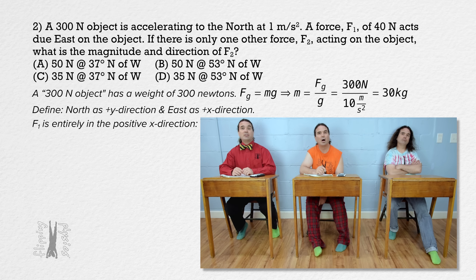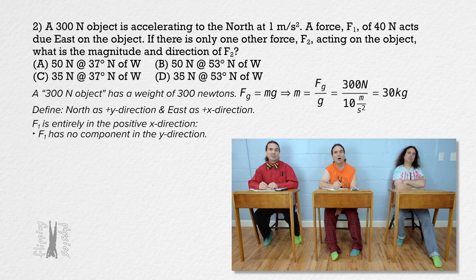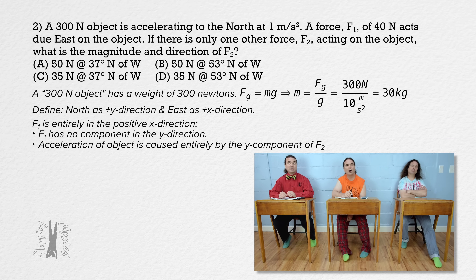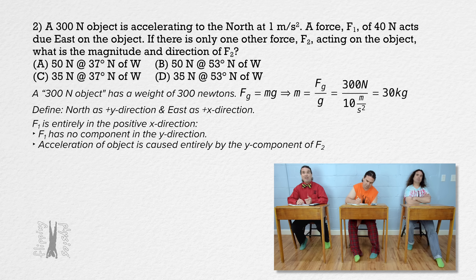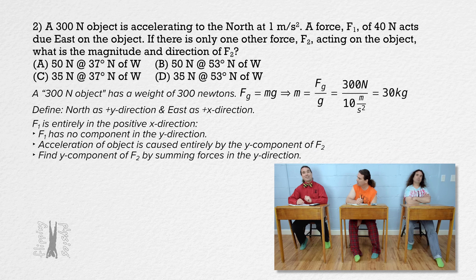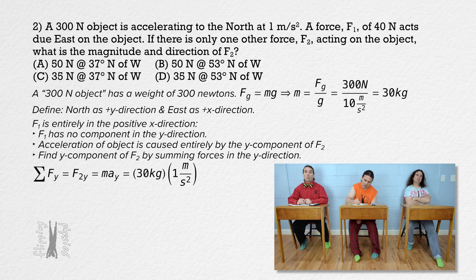We know the acceleration of the object is directly north, so let's call north the positive y direction and east the positive x direction. Because force one is entirely in the positive x direction, it has no component in the y direction. That means the acceleration is caused entirely by the y component of force two. Summing forces in the y direction: force two in the y direction equals mass times acceleration in the y direction — 30 kilograms times 1 meter per second squared — which equals 30 newtons.